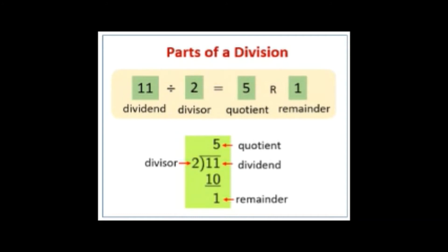Now the meaning of the parts of division. Dividend means the number being divided. Divisor is the number that will divide the dividend. Quotient is the result of division. Remainder is the number that's left after you divide. That's all about the parts of division. We will proceed now to our last lesson: the MDAS rule.